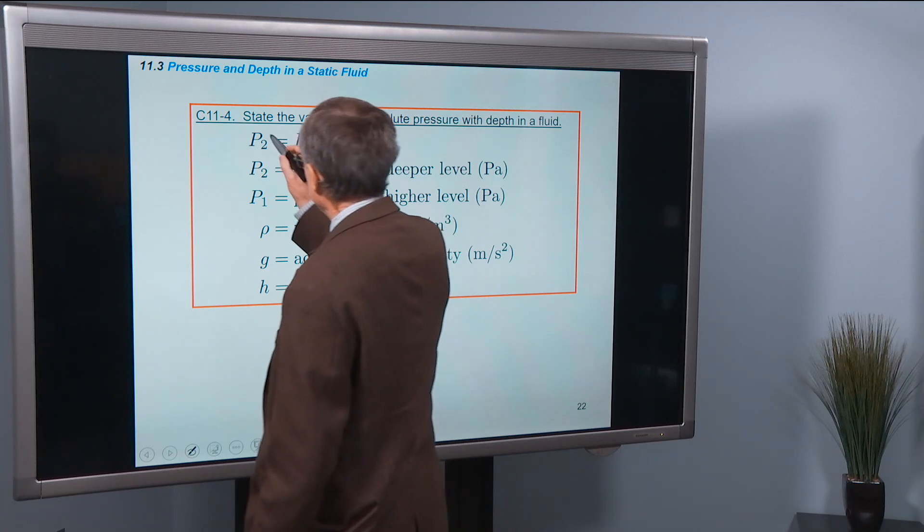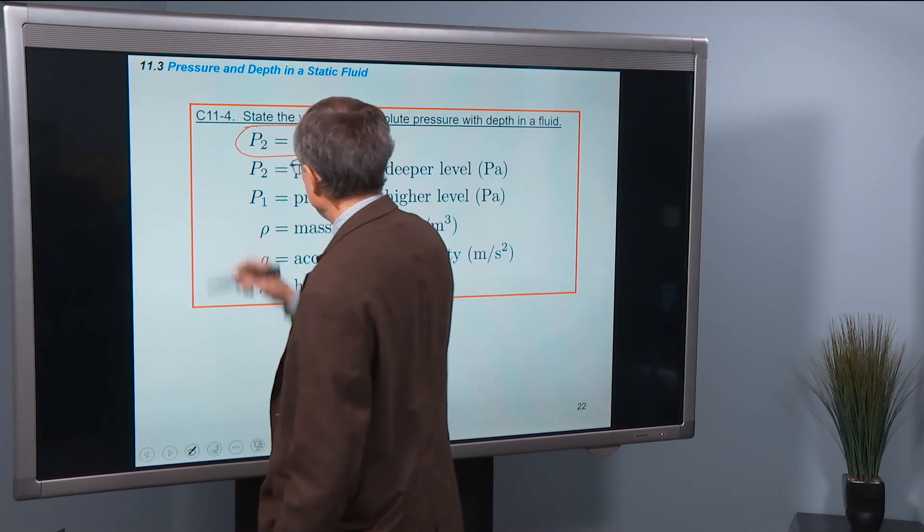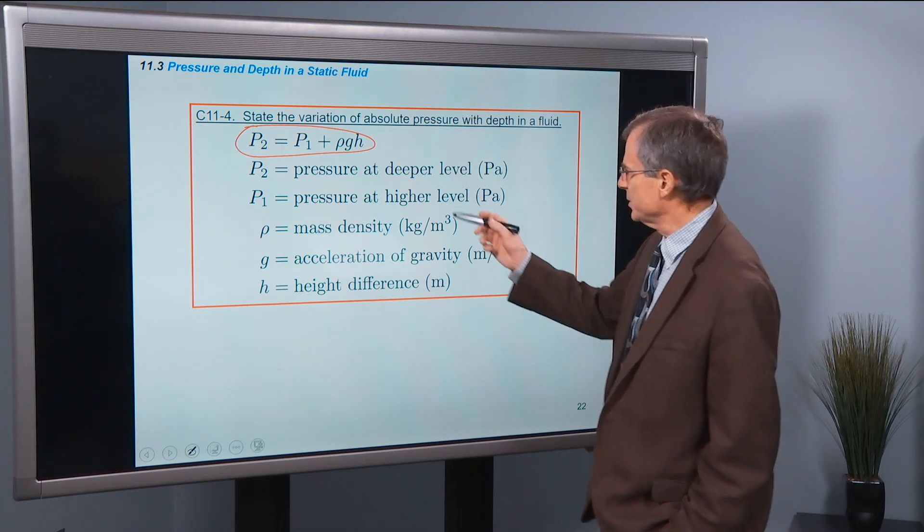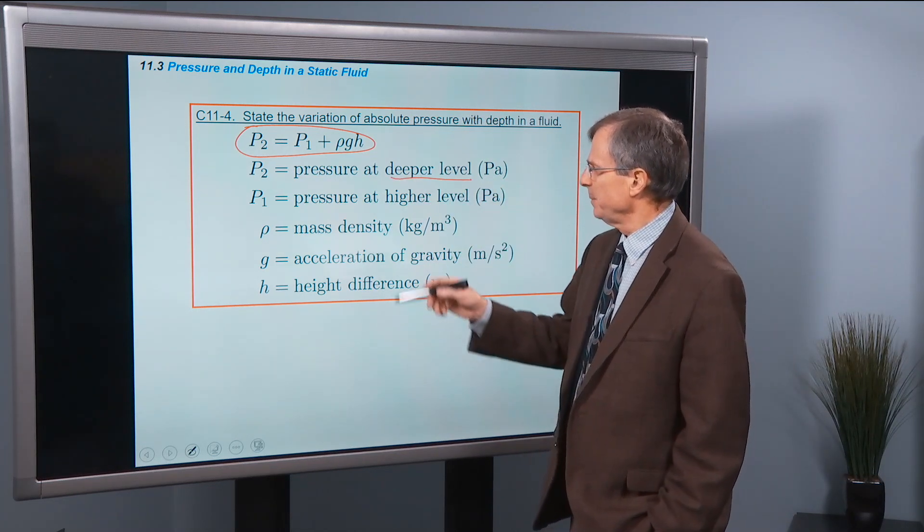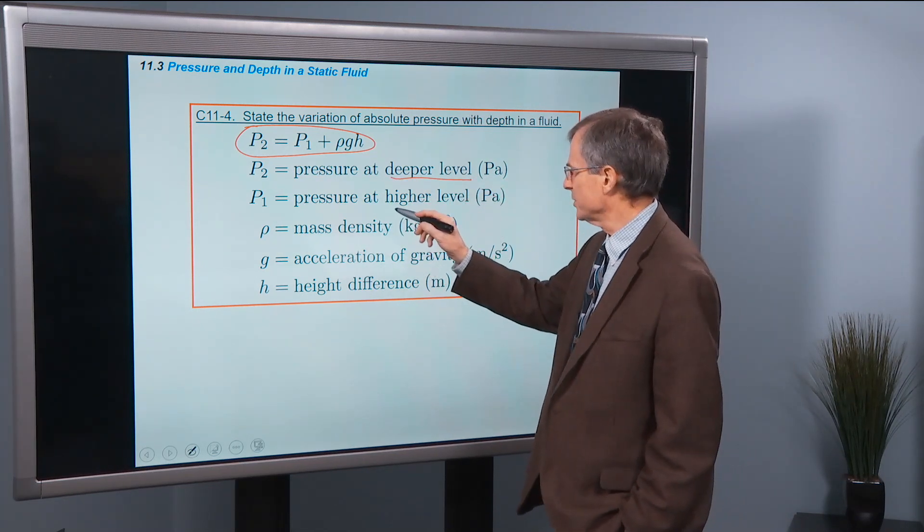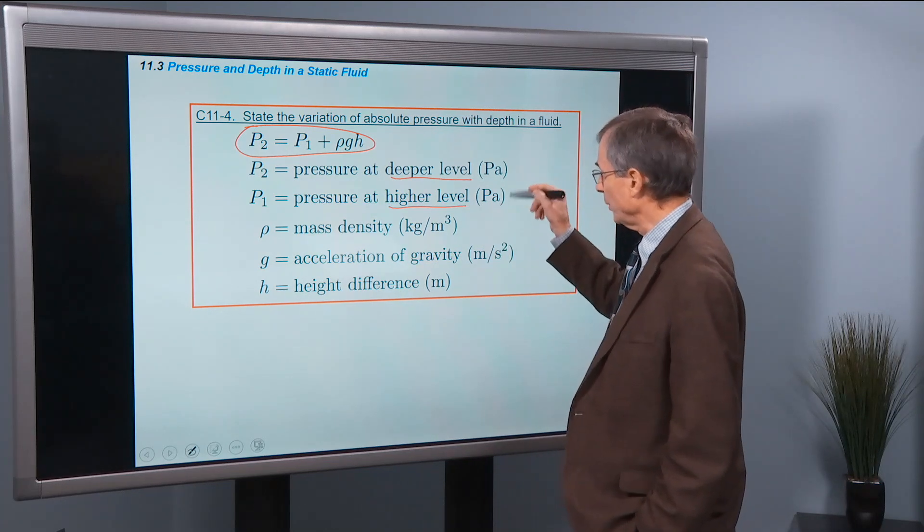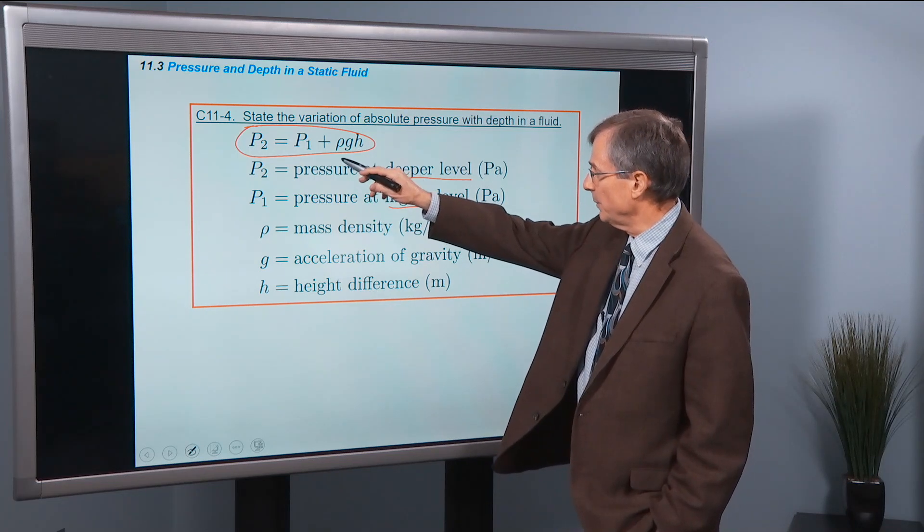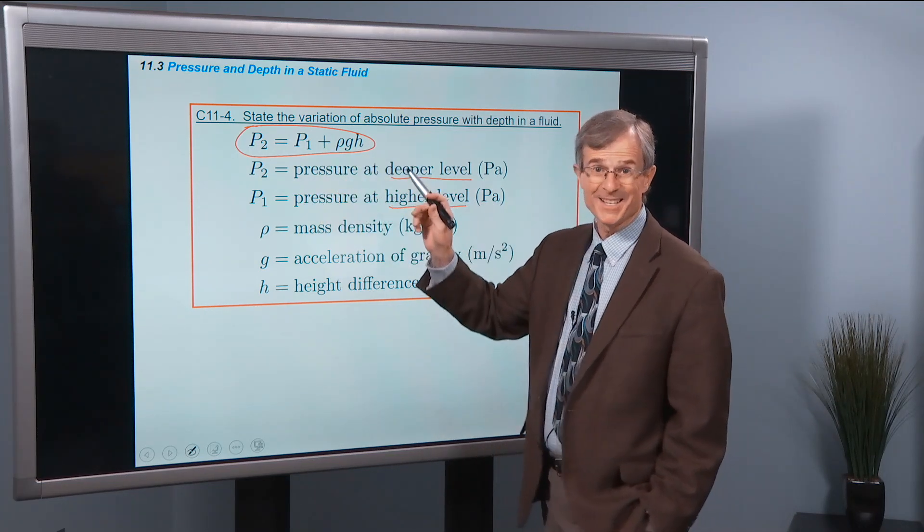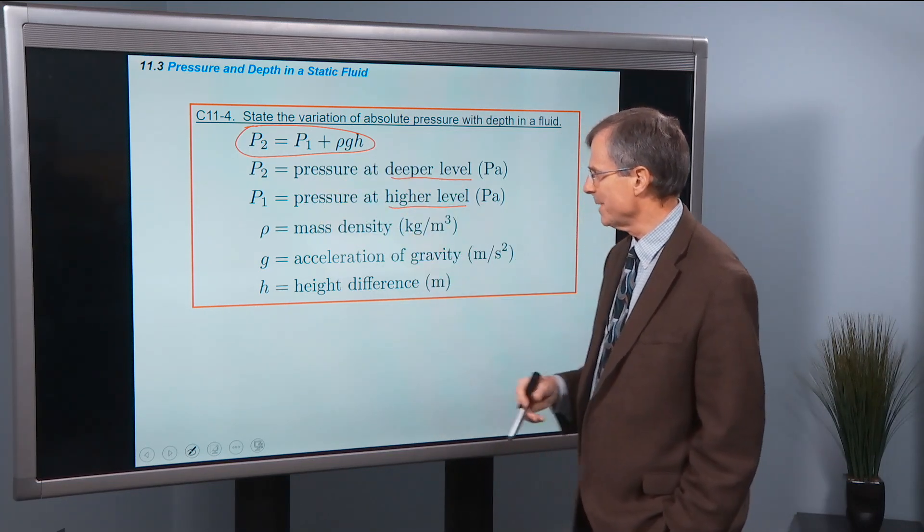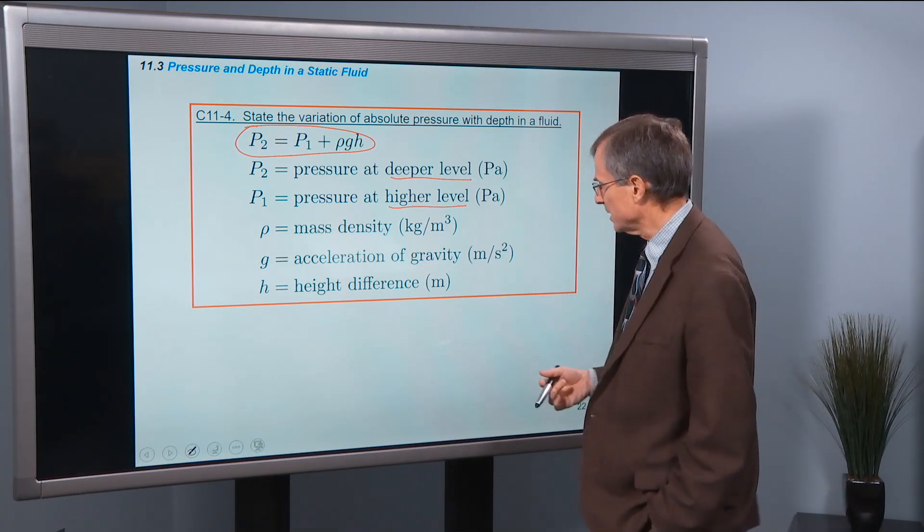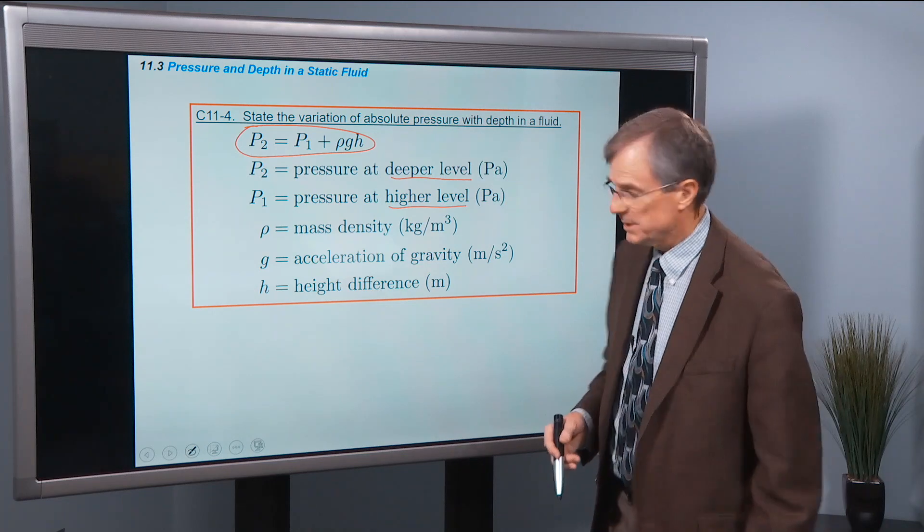But the requirement is for you to understand and know this relationship. P2, the pressure at a deeper level, equals P1, the pressure at the higher level, both measured in pascals, equals P1 plus rho gh, where rho is the mass density, g is the acceleration of gravity, 9.8 meters per second squared, and h is the height difference.